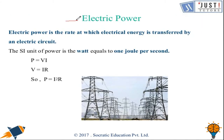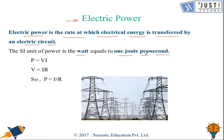Electric power is usually produced by electric generators but can also be supplied by sources such as electric batteries. Electric power is the rate at which electric energy is transferred by an electric circuit. The SI unit of power is the watt, equal to 1 joule per second. The expression given for this is P = I²R.